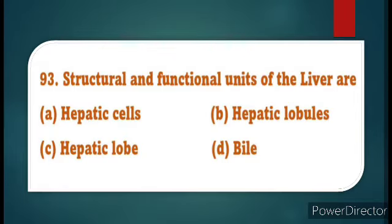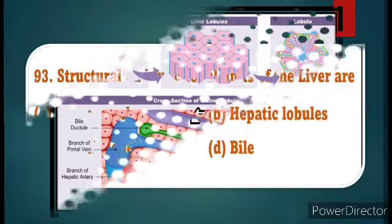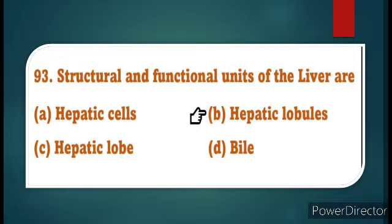Question number 93: Structural and functional units of the liver are? The answer is hepatic lobules. Hepatic lobules are the structural and functional unit of the liver. These hepatic lobules are connected to form small ducts, small ducts are connected to form large ducts, and the right ducts combine to form the common hepatic duct. These hepatic lobules are also covered by Glisson's capsule. The answer is hepatic lobules.